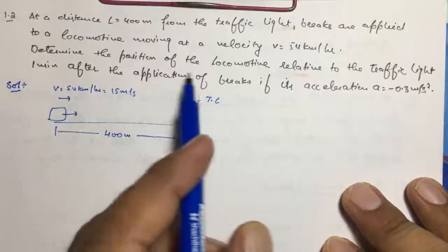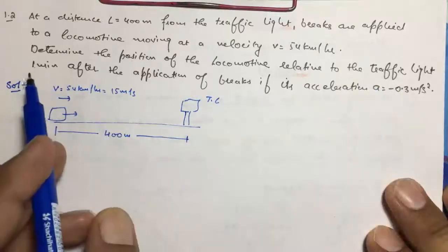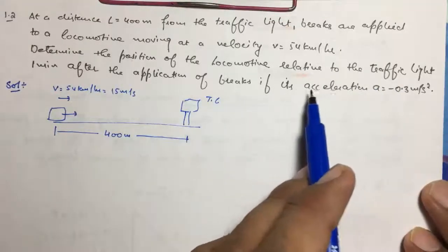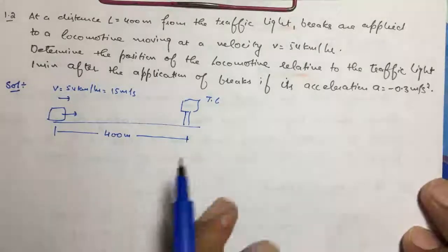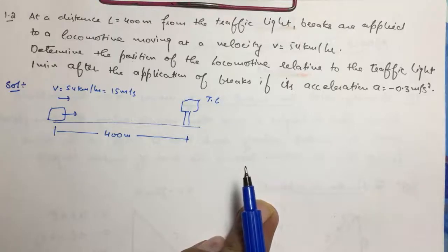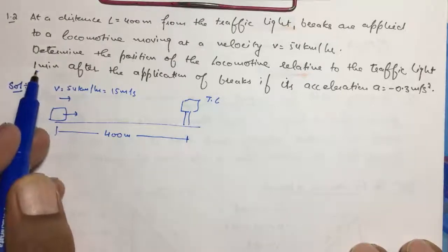It is given like this: determine the position of locomotive relative to traffic lights one minute after the application of brakes if its acceleration is -0.3 meters per second squared. So they are asking about the position after the brakes are applied for one minute.